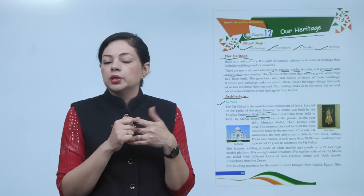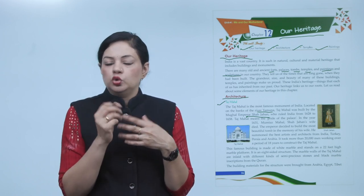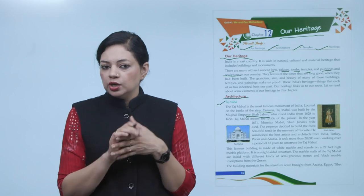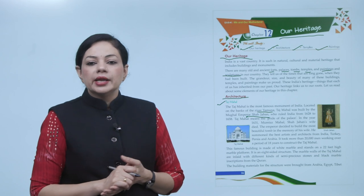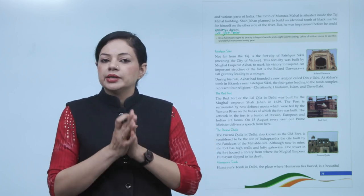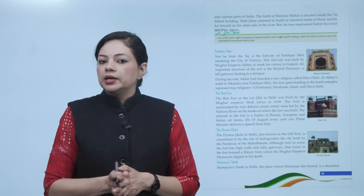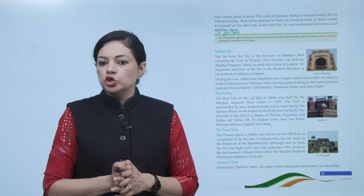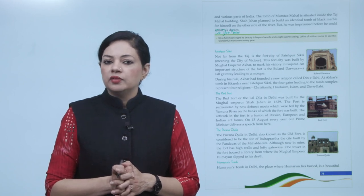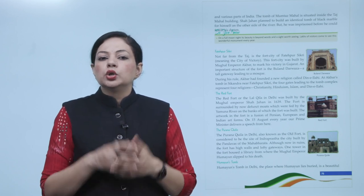The building materials for the structure were brought from Arabia, Egypt, Tibet and various parts of India. The tomb of Mumtaj Mahal is situated inside the Taj Mahal building. Shah Jahan planned to build an identical tomb of black marble for himself on the other side of the river, but he was imprisoned before he could do this.